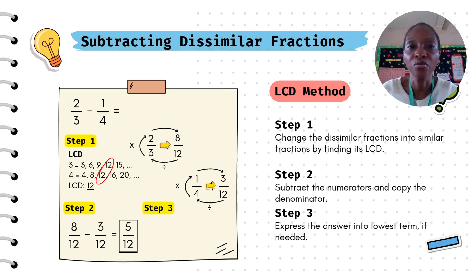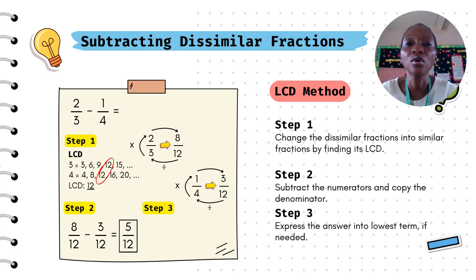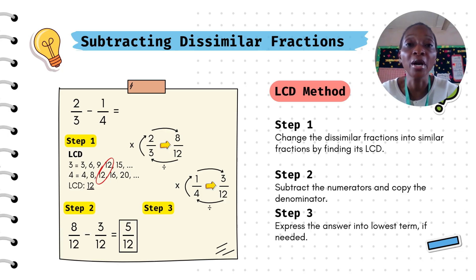Let's go through an example. You have 2 over 3 minus 1 over 4. Your denominators are 3 and 4, so you look for their LCD. Multiples of 3: 3, 6, 9, 12, 15. Multiples of 4: 4, 8, 12, 16, 20. The LCD is 12. For 1 over 4, multiply by 3 to get 3 over 12. For 2 over 3, multiply by 4 to get 8 over 12. So 8 over 12 minus 3 over 12 gives you 5 over 12. This cannot be divided further, so the final answer is 5 over 12.